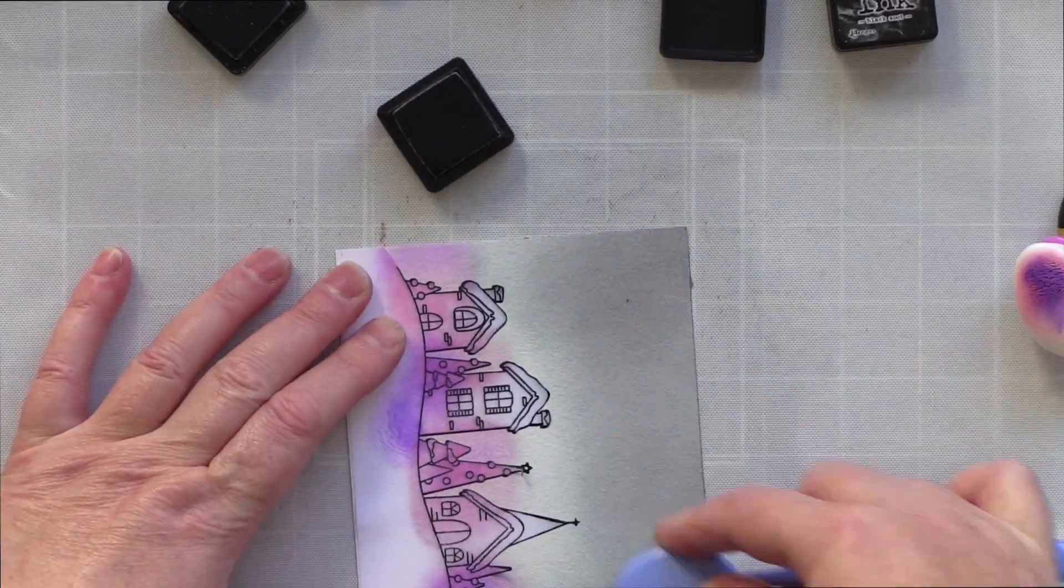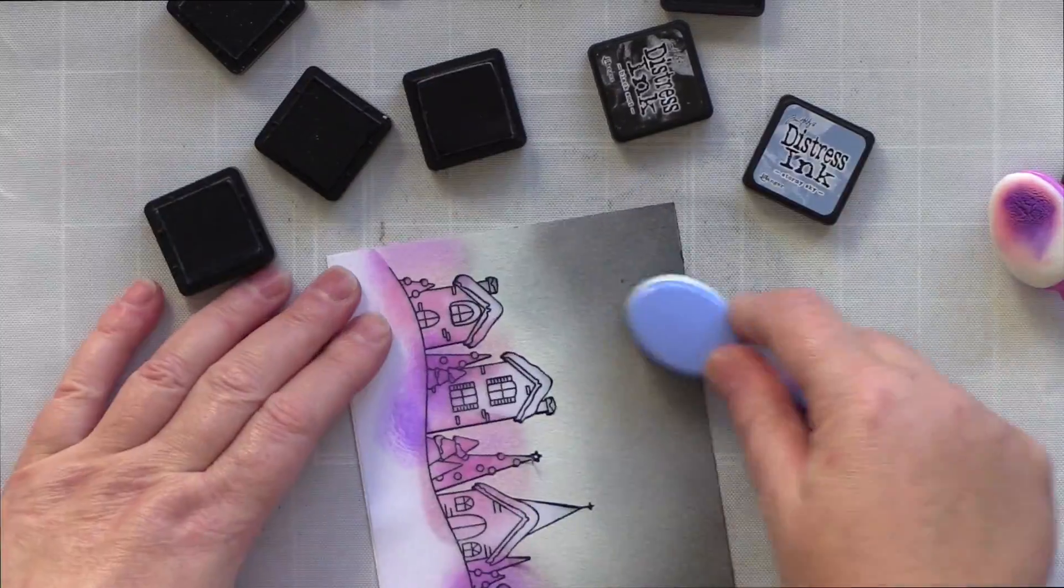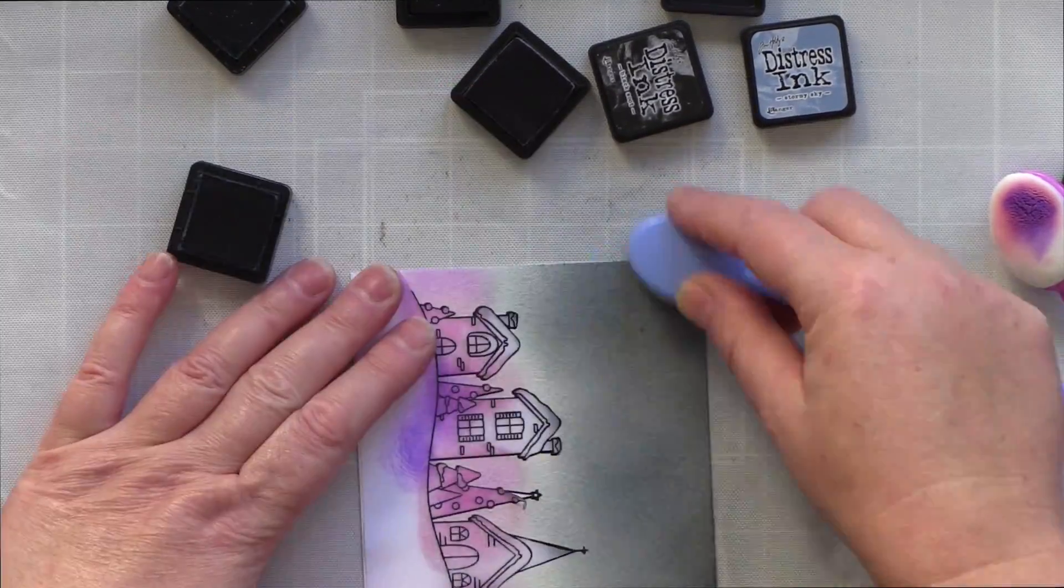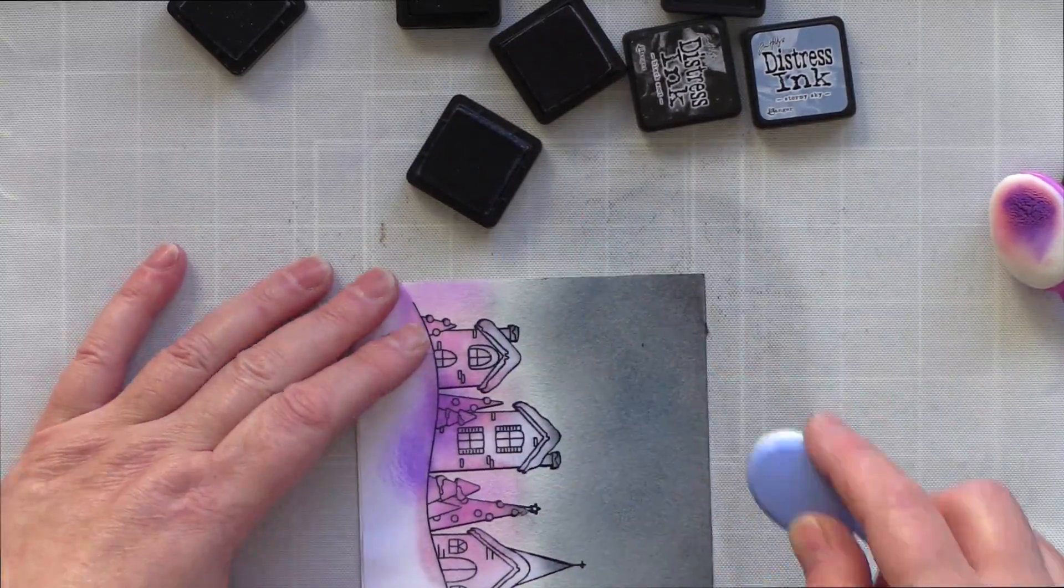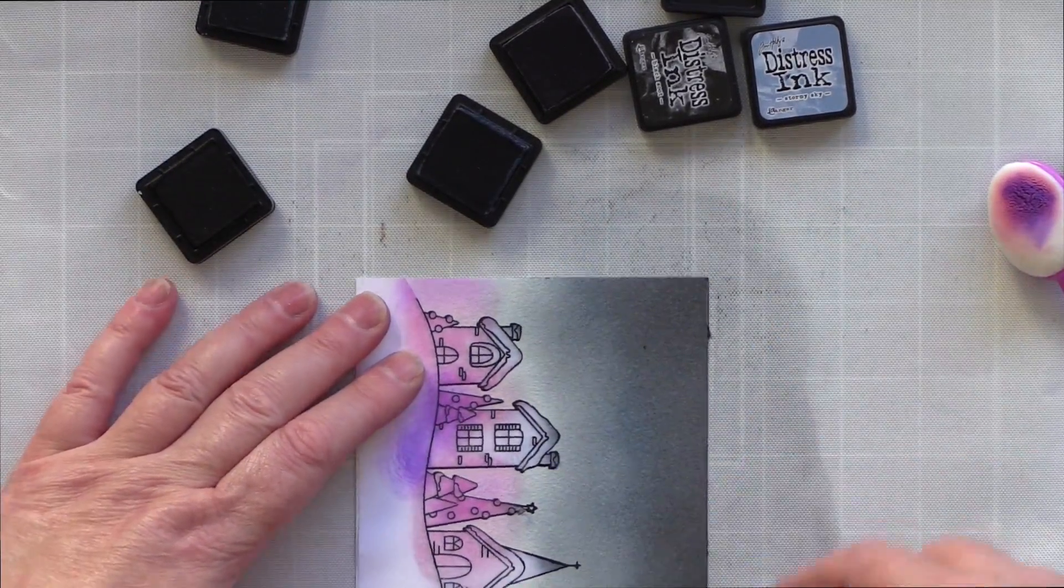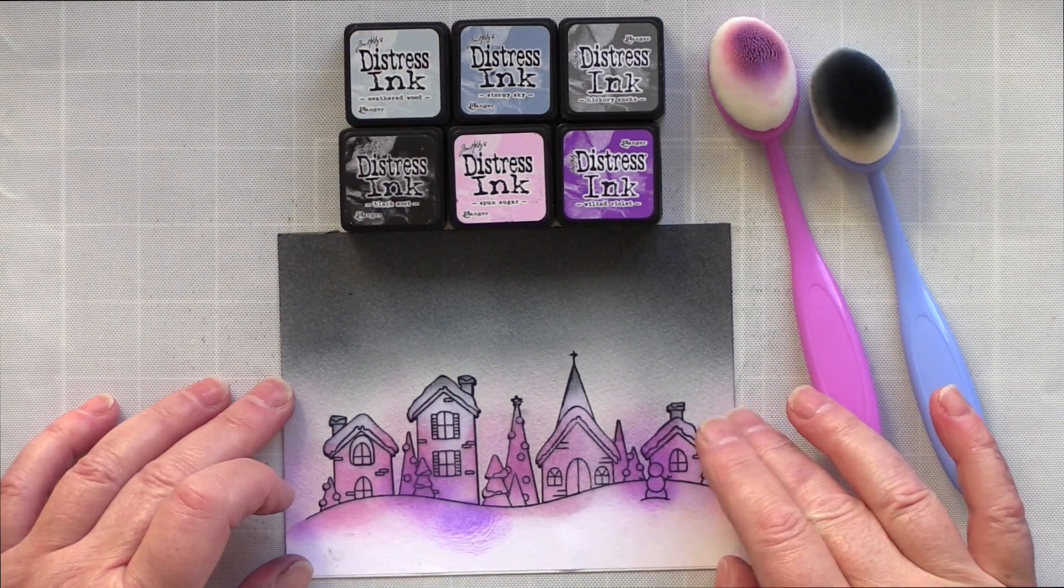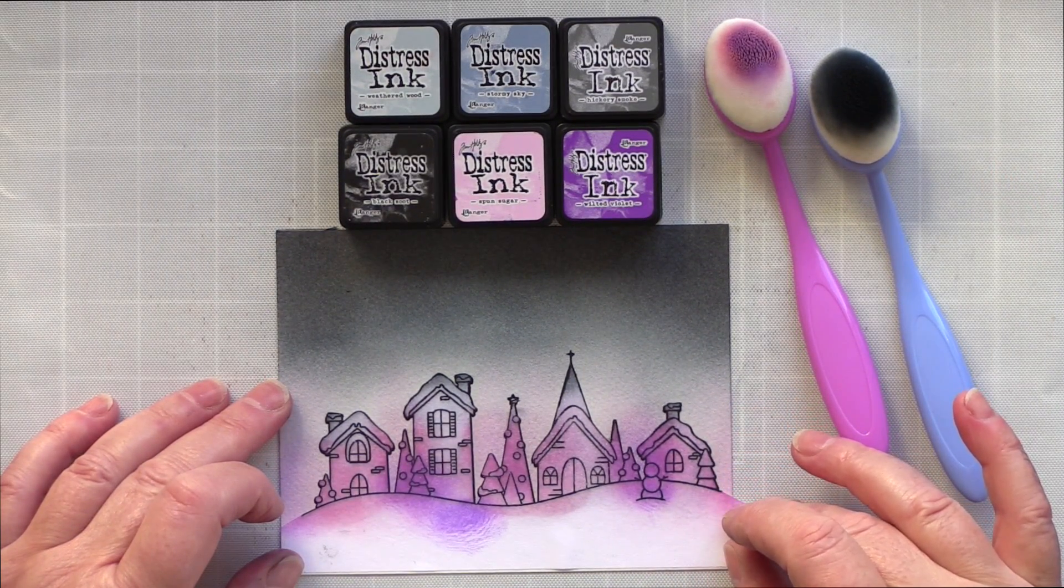As you can see, I speeded up this section of the video to super speed because ink blending on watercolour card does take a bit of time. The paper absorbs the ink more and the cold pressed texture takes some working over too. However, finally you do get a lovely deep rich ink blended sky. Here you can see the colours I used again.